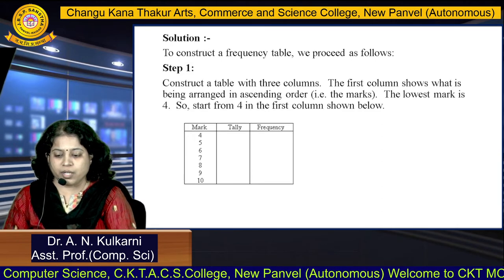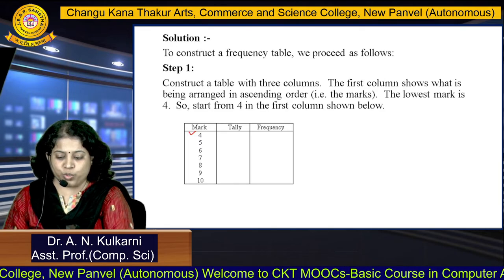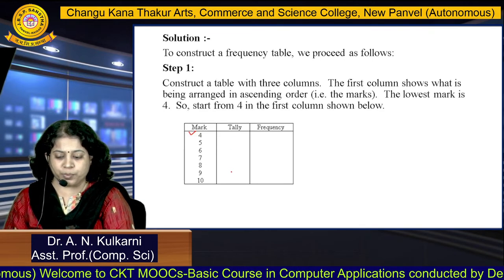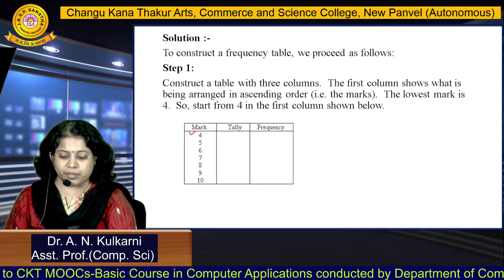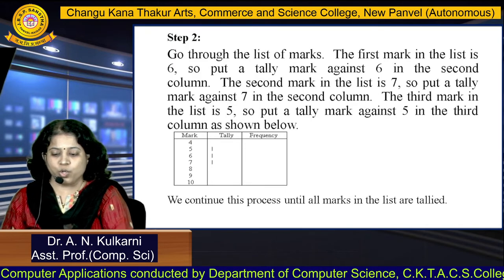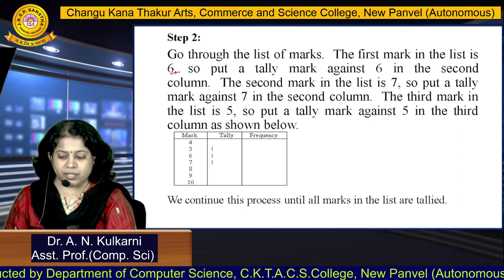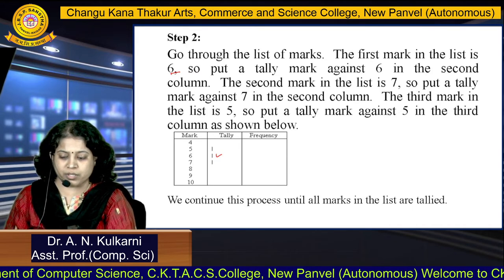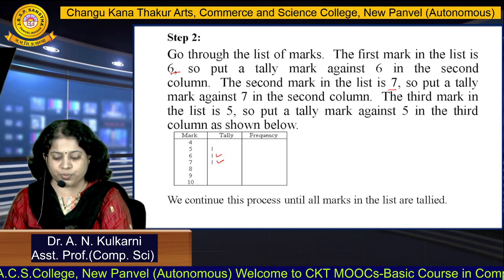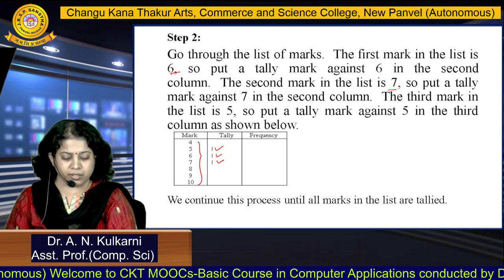Construct a table with three columns. The first column shows data items — that is, marks — arranged in ascending order: 4, 5, 6, 7, and so on. The second column is for tally marks as representation of data, and the third is frequency for repetition. Start with 4 from your list. The first mark in the list is 6, so put a tally mark against 6. The second mark is 7, so put a tally mark against 7. The third mark is 5, so put a tally mark against 5. Continue this process until all marks in the list are tallied.